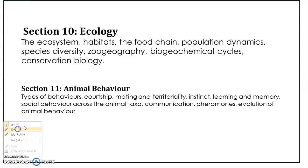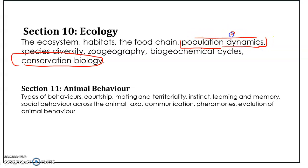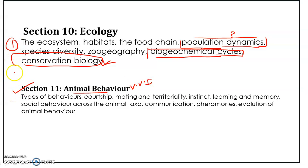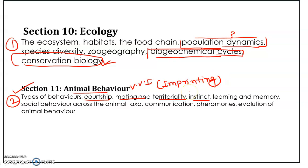In ecology, conservation biology and species population dynamics are important areas, though previously there were no questions from population dynamics. Biogeochemical cycles are important. Animal behavior is also very important — you will get one or two questions from it. Study courtship behavior, mating strategies, territoriality, instinct behavior, and especially imprinting, which is particularly important.